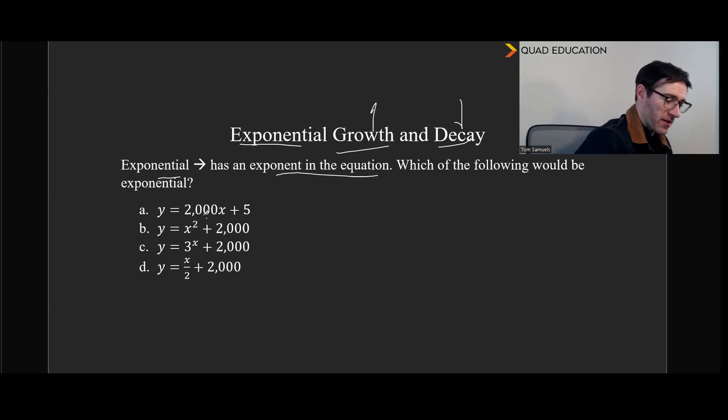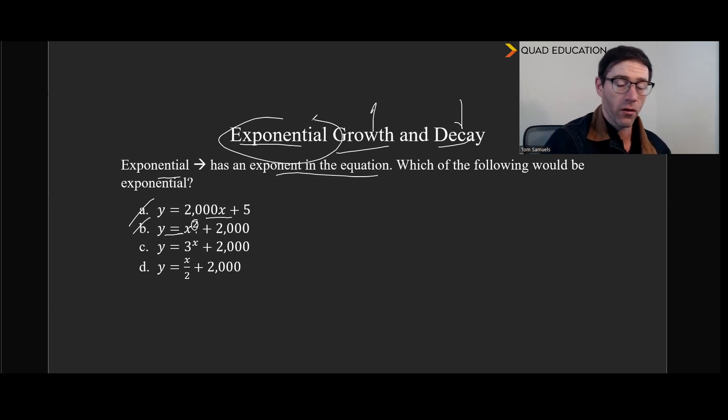Well, certainly not A because that's linear. What some people may pick is B, but the issue there is there's just a number right there. So an exponential growth or decay equation will have an input, a variable, as the exponent. In this case, the exponent is just a constant and the input is still a value. It's not until option C here, we have 3 to the X, we see our first exponential, first and only exponential equation.